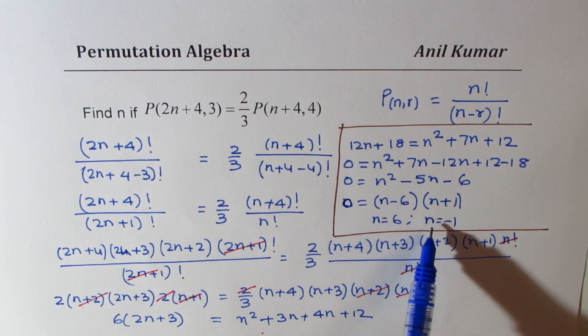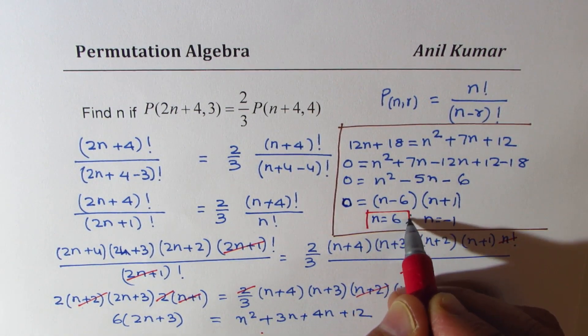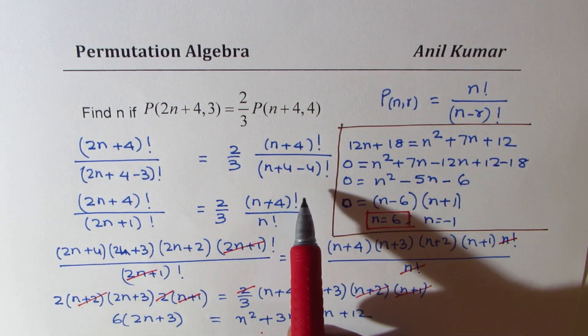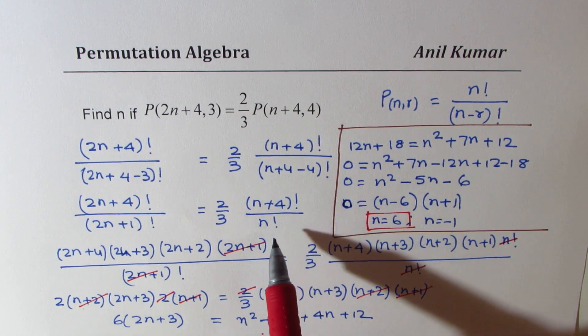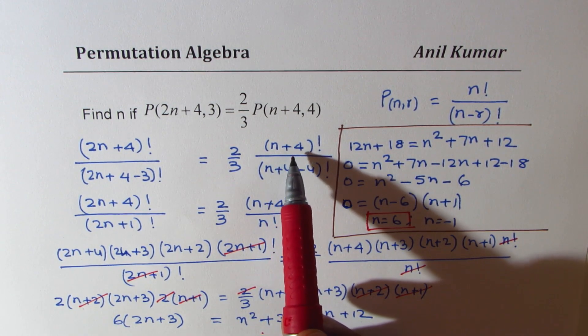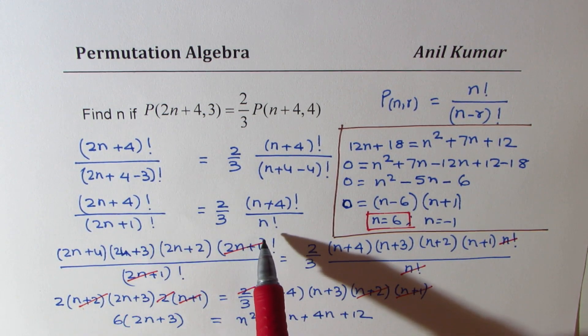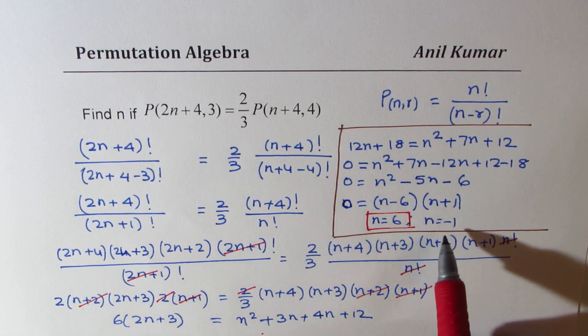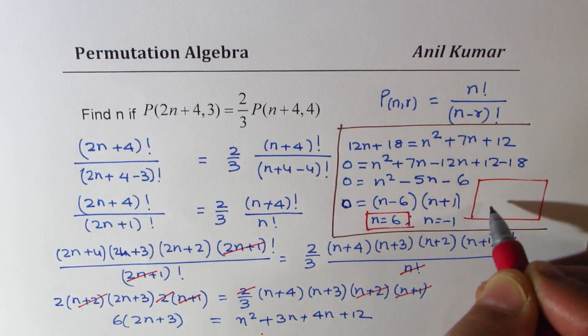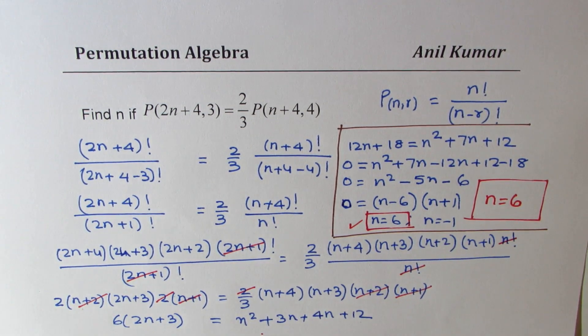Now clearly, n equals minus 1 is not valid, so n equals 6 is the right solution. This one cannot be correct. From the restrictions, you can always see that n has to be positive because these terms should always be positive. So from all these terms, you can say that n has to be positive. So that is not possible. And therefore, we do get a solution and that is n equals 6. So this is the solution for the given equation.